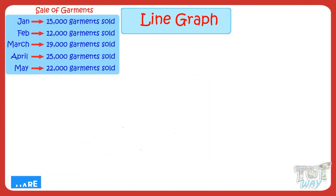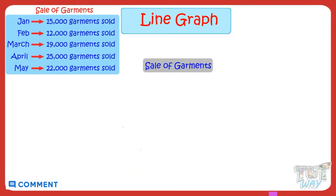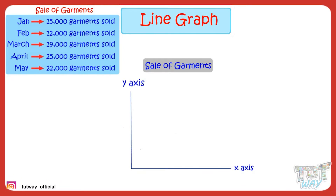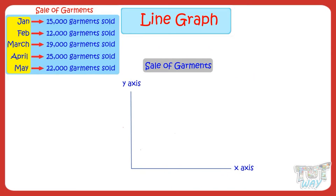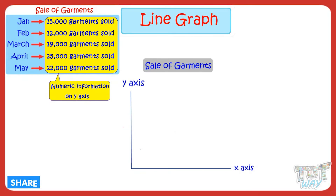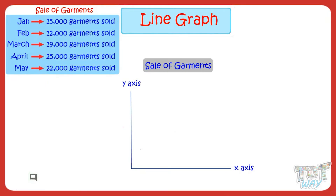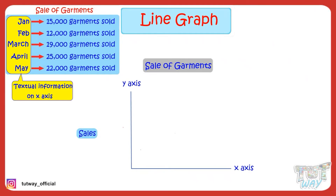First of all, let's give a title to our graph. Let it be 'Sale of Garments'. Now, we always have two axes in a graph: x-axis and y-axis. We depict one type of information on x-axis and another on y-axis. Here, the two types of info we have are names of months, which is textual information, and sale of garments in a month, which is our numeric information. Always show numeric information on y-axis preferably. Let y-axis be for showing the sales, and let x-axis be for showing names of months.